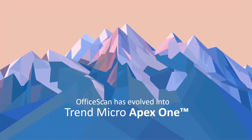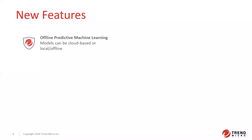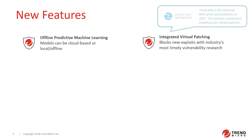Apex One is the renaming of Office Scan, and we've added a lot of new functionality. This includes offline predictive machine learning — you can now use our cloud-based machine learning or, in air-gap situations, a local offline model. We've also integrated virtual patching so you can block exploits with the industry's most timely vulnerability patching, powered by our ZDI initiative, through which we knew 66% of all new vulnerabilities first in 2017.